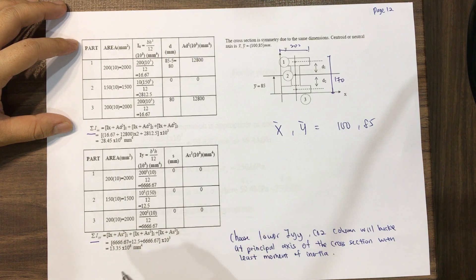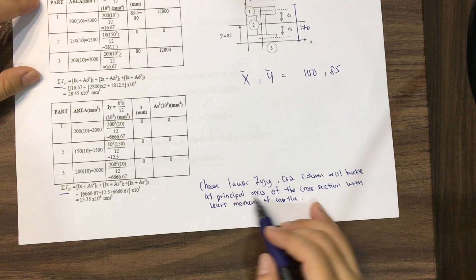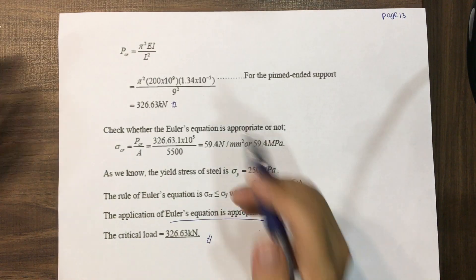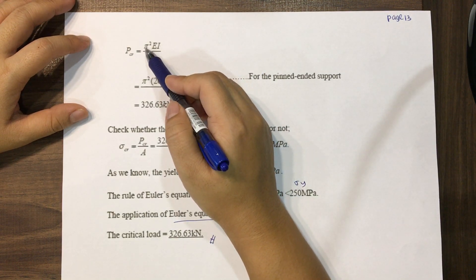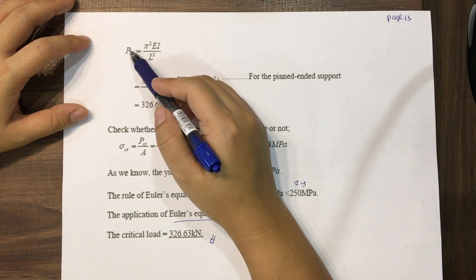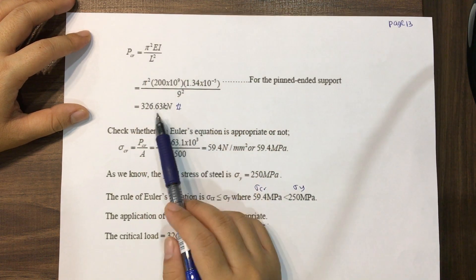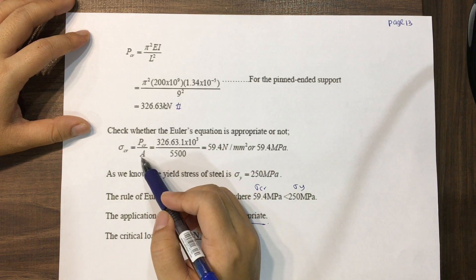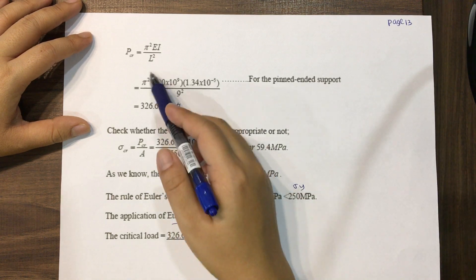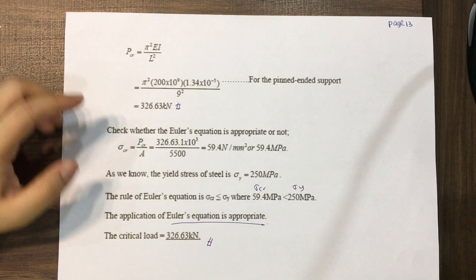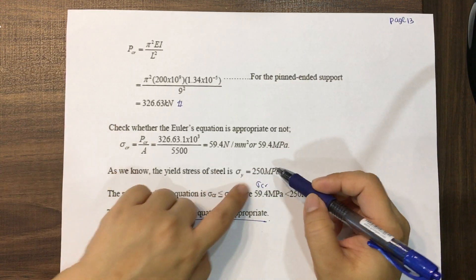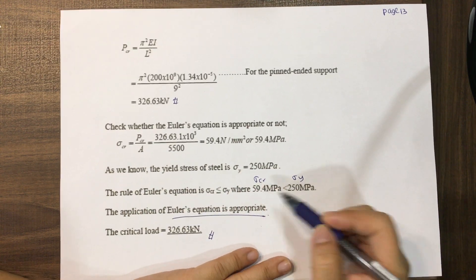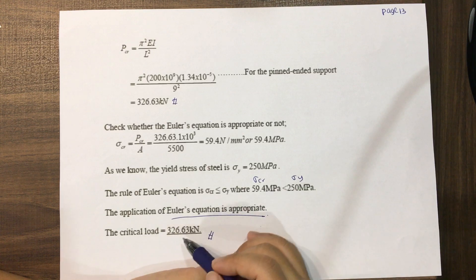Take I_yy = 13.35 × 10⁶ mm⁴ because it is less than I_xx = 28.45 × 10⁶ mm⁴ — the column buckles at the principal axis with the least moment of inertia. Substituting into P_CR = π²EI / L², then computing the critical stress as P_CR / A gives 59.4 MPa. Since 59.4 MPa < 250 MPa (yield stress), the Euler equation is appropriate and the calculated critical load is valid.